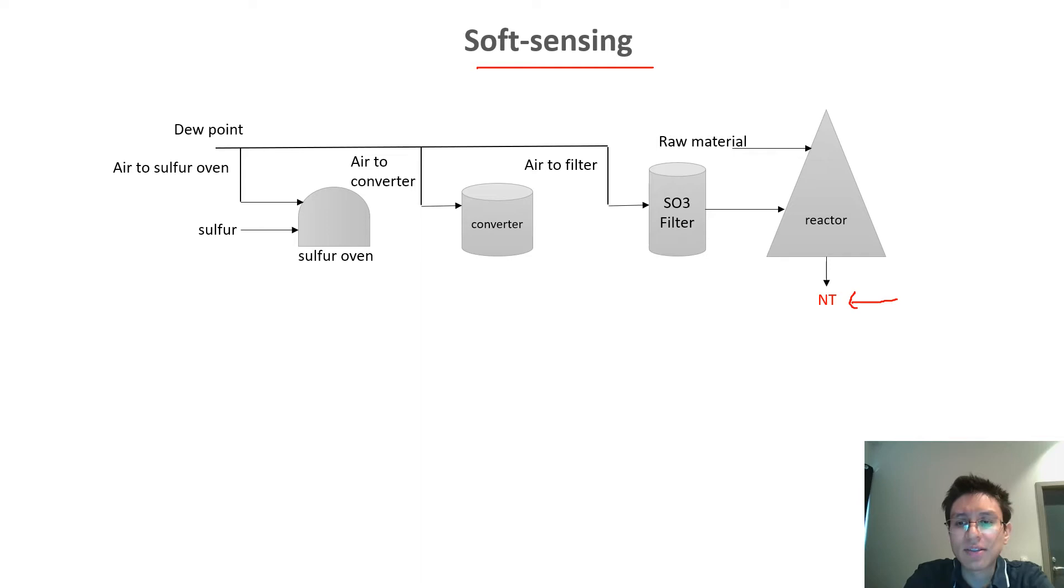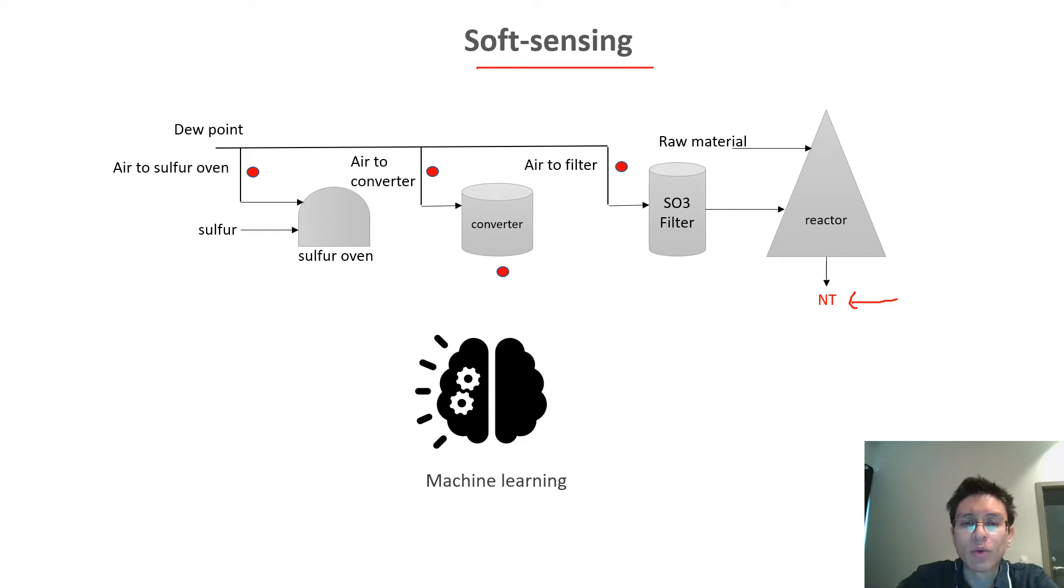In soft-sensing, instead of having a real sensor, we can use the process parameters to try to estimate the variable of interest. In this case, we use machine learning and we use those input parameters to train a model that automatically predicts the NT value. In this case, we can reduce the time from 30 minutes to a couple of seconds.